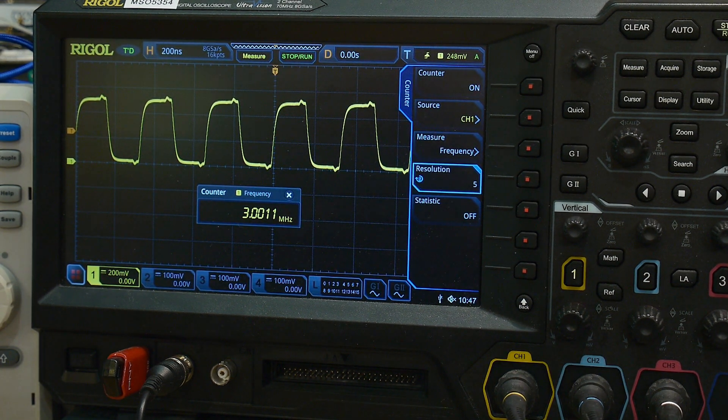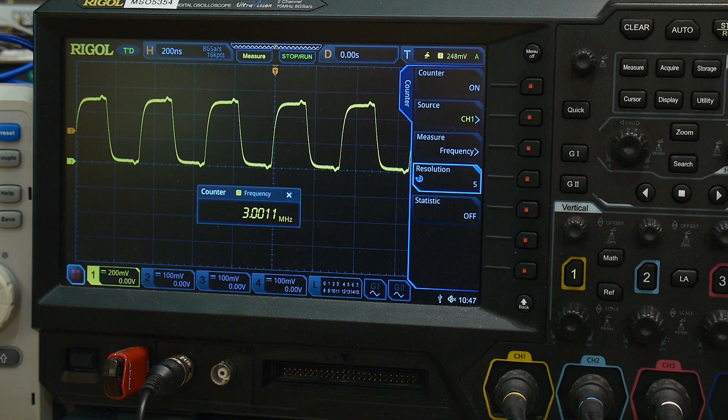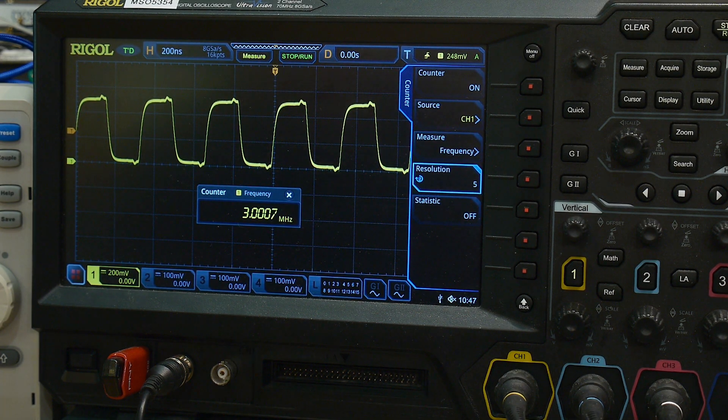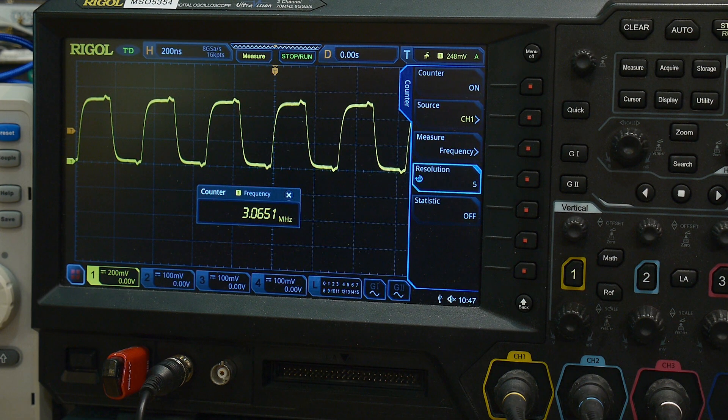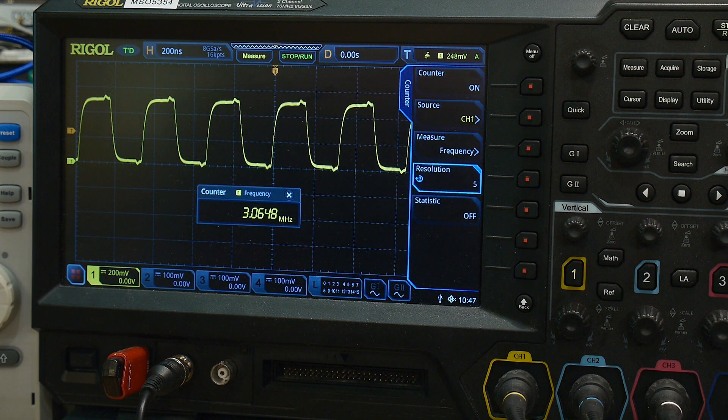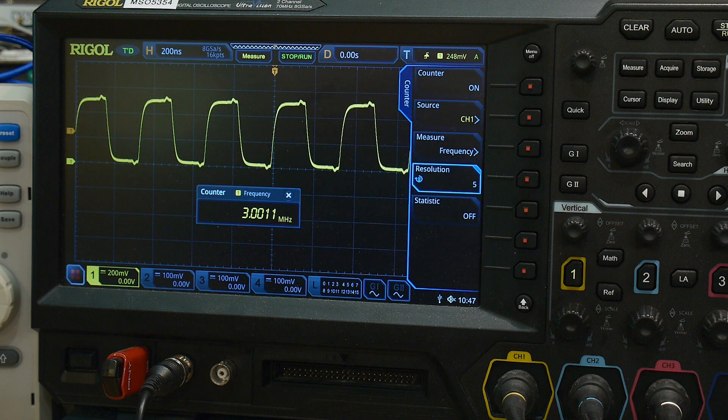But if you put both of them in there, you're right. Well, let me take out the other one. People gonna say, why don't you take out the other one? Take out the other one, it's 3.06. Put that back in, we're at 3.001. Very, very nice.